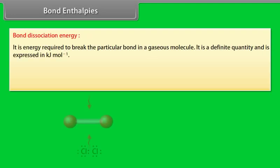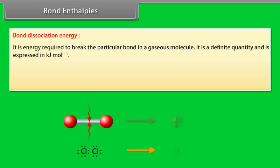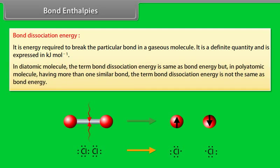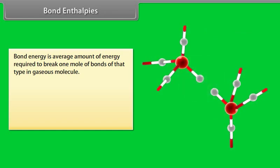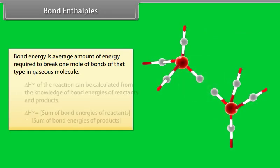Bond enthalpies: Bond dissociation energy is defined as the energy required to break a particular bond in a gaseous molecule, expressed in kilojoules per mole. In a diatomic molecule, bond dissociation energy equals bond energy. In a polyatomic molecule with more than one similar bond, bond dissociation energy is not the same as bond energy. Bond energy is the average amount of energy required to break one mole of bonds of a given type in a gaseous molecule. Delta H of a reaction can be calculated from the bond energies of reactants and products.